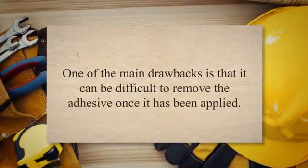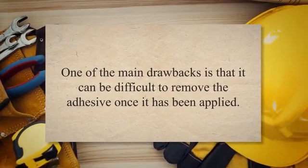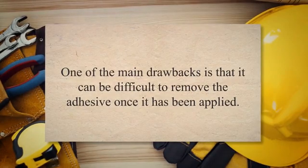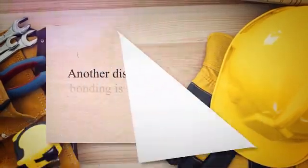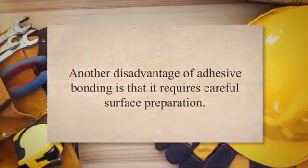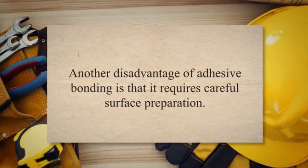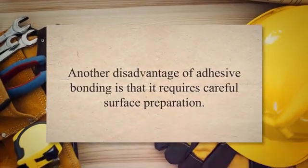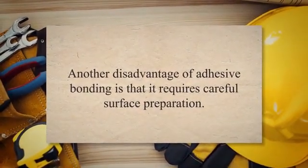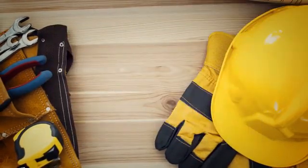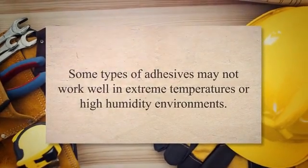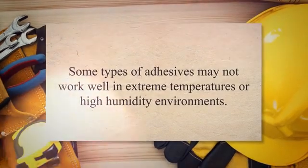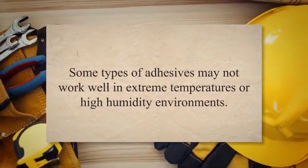However, there are also some disadvantages to adhesive bonding. One of the main drawbacks is that it can be difficult to remove the adhesive once it has been applied, which can make repairs or modifications more challenging. Another disadvantage is that it requires careful surface preparation — the surfaces must be clean, dry, and free from any contaminants such as oil or grease. Failure to prepare the surfaces properly can result in a weak bond or even complete failure. Finally, adhesive bonding can be affected by environmental factors such as temperature and humidity, and some adhesives may not work well in extreme conditions. It is important to choose the right type of adhesive and follow the manufacturer's instructions carefully.